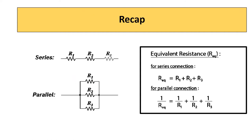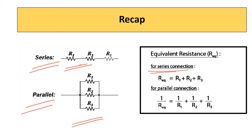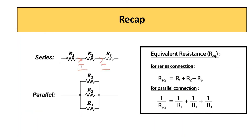In this session, we learned about resistors in series and resistors in parallel. Series means end to end connection, whereas in parallel the terminals are connected to the same two nodes. For series connection, the equivalent resistance is the sum of the resistances. For parallel connection, the reciprocal of the equivalent resistance equals the sum of the reciprocals of the individual resistances. For series connection the current is the same; for parallel connection the current through each resistor is different. In series combination the voltage is different across each resistor, whereas the voltage is the same for each resistor in parallel connection.